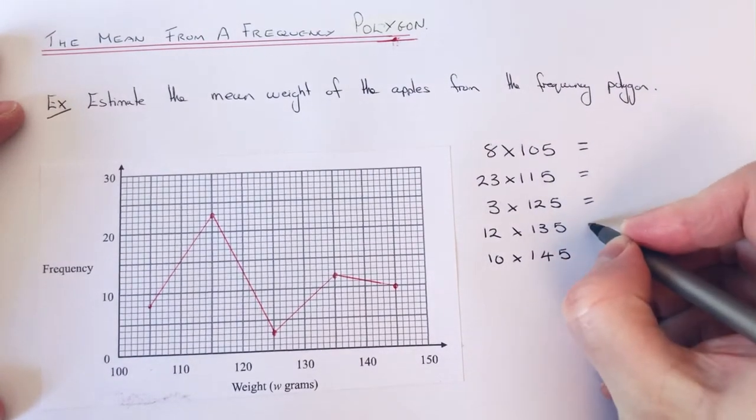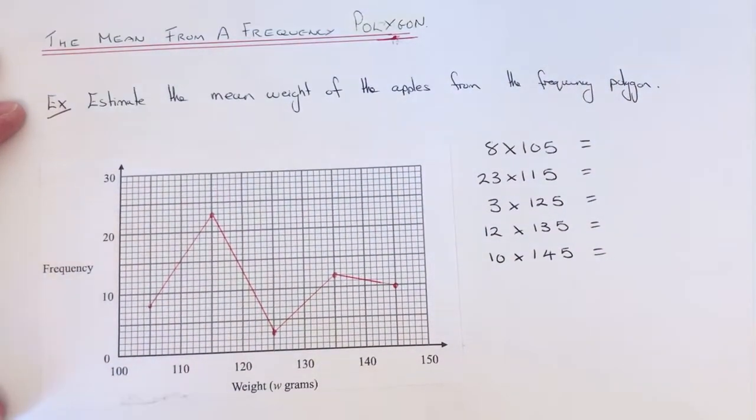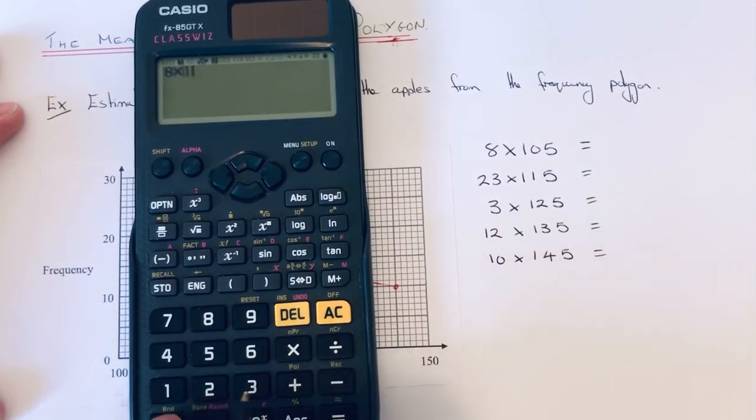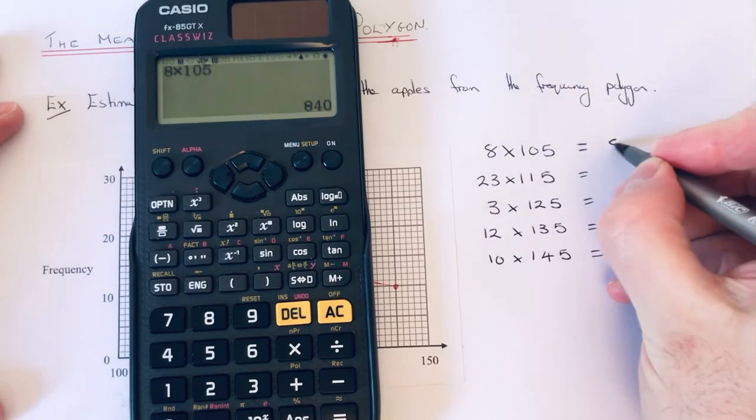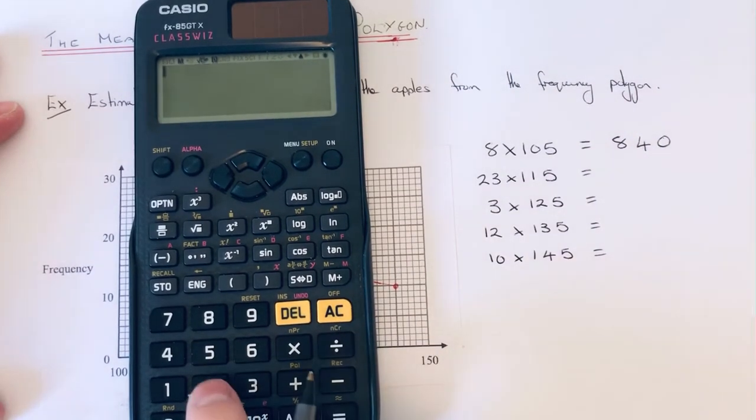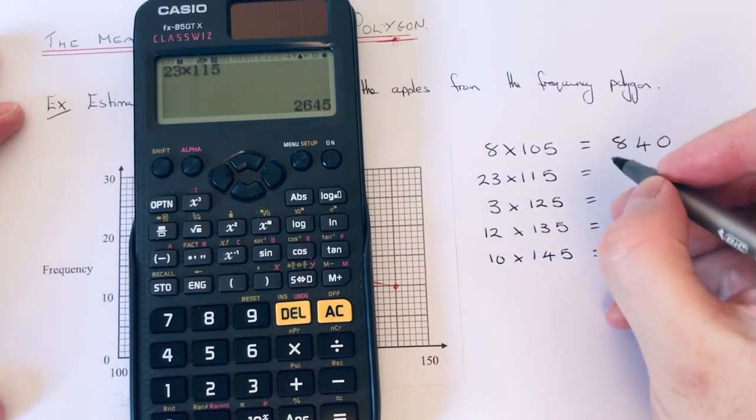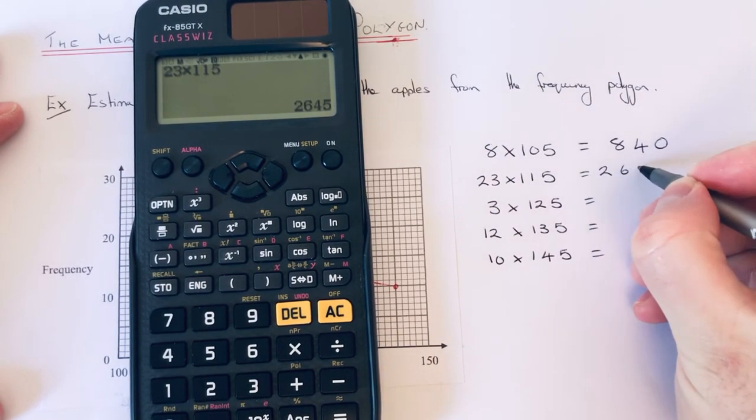So let's work these five out. 8 times 105 is 840 grams. 23 times 115 is 2645.